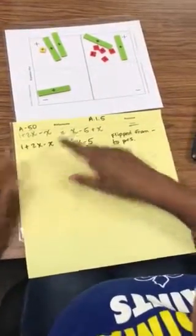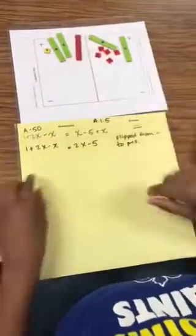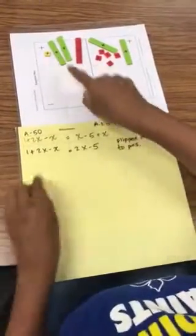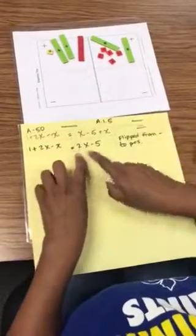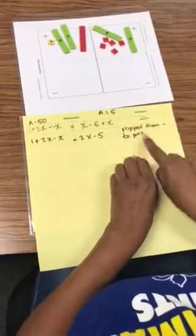Next step, I'm going to flip everything from the negative region to the positive region and that gives us 1 plus 2x minus x equals 2x minus 5. The reason is I flipped from negative to positive.